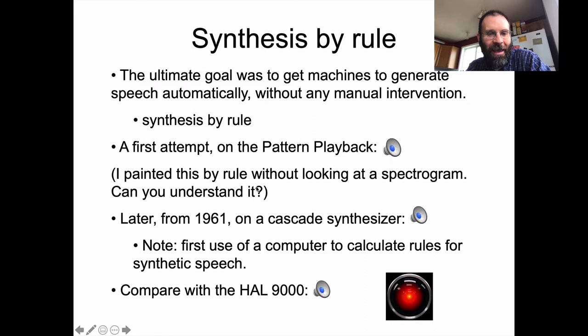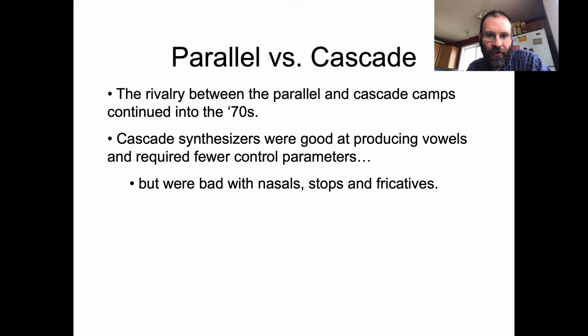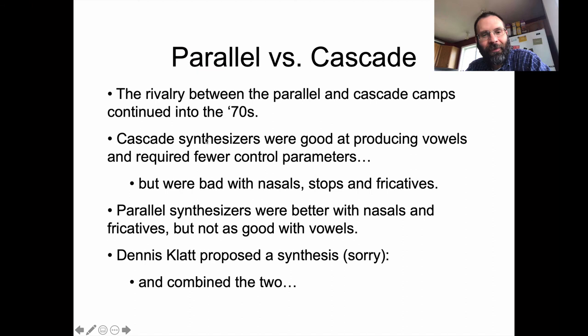The rivalry between the parallel and cascade camps continued into the 1970s. It turned out cascade synthesizers were better at producing vowels and required fewer control parameters, but were bad with nasal stops and fricatives. Parallel synthesizers were better with nasals and fricatives but not as good with vowels. There was a famous phonetician and engineer named Dennis Klatt who proposed a synthesis of the two by the late 70s and earned himself eternal phonetic fame for that reason. His system was known as Klatt Talk.